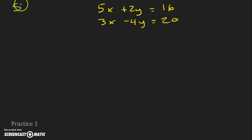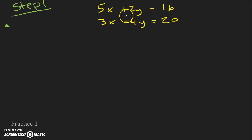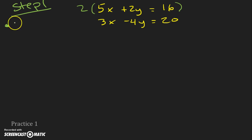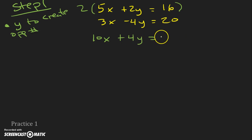So step one is to multiply. Are we trying to create the same number in front of one of the variables or the opposite? These have the same sign, so multiplying to get from one x coefficient to the other would give a decimal — it doesn't make sense to eliminate x first. These are opposite signs, so if we add them they'll add to 0. We just need to get the number in front of y to 4, because positive and negative 4 are opposites. 2 times 2 gives us 4, so we multiply to create the opposite. 2 times 5 is 10, 2 times 2 is 4, and 2 times 16 is 32.